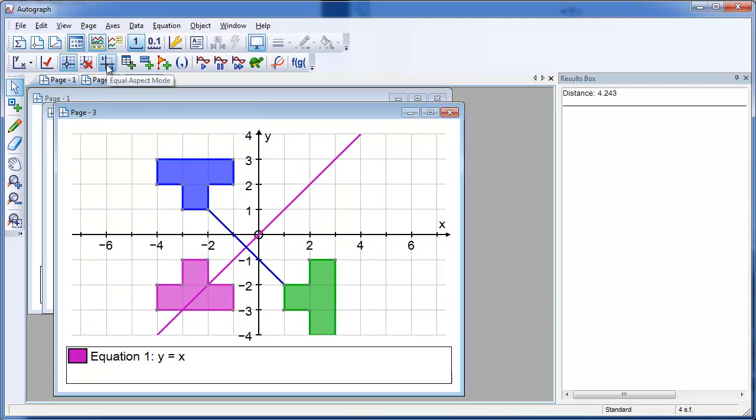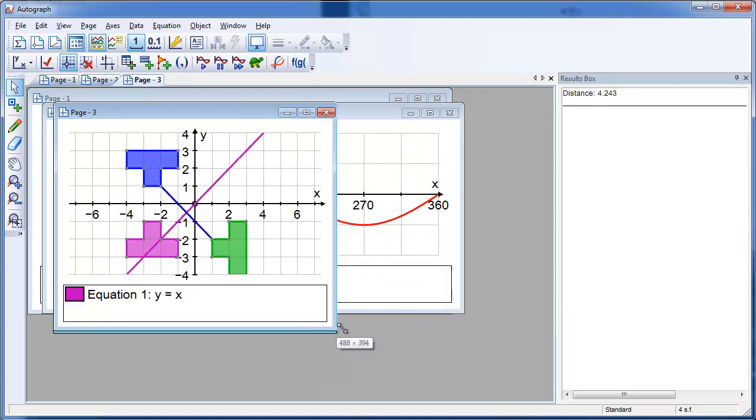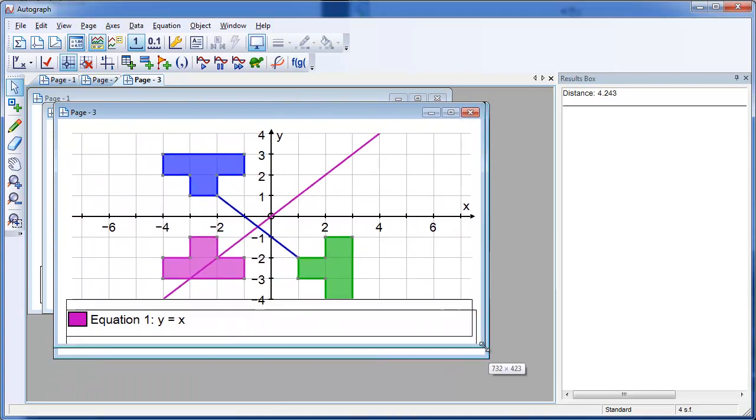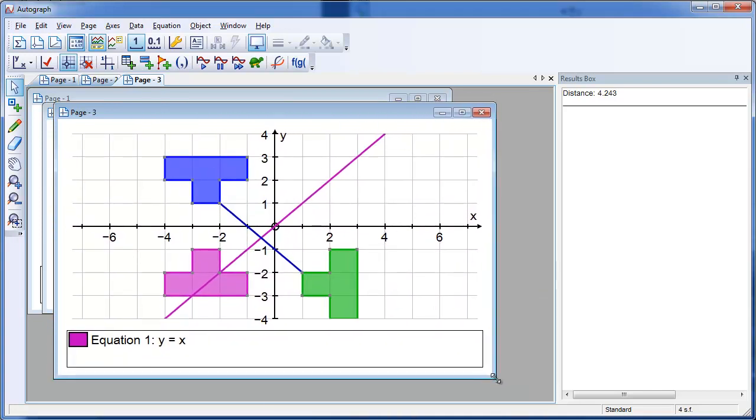Whereas if I take equal aspect off that is no longer preserved and we can make that angle anything we like. So there are certain occasions when equal aspect is actually very important.